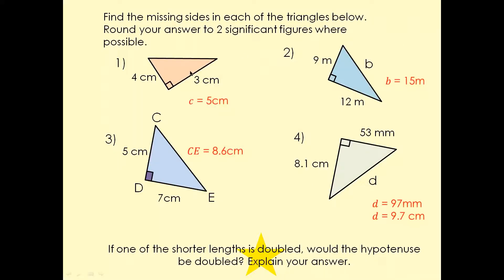For question one, we do 4 squared plus 3 squared. 4 squared is 16 and 3 squared is 9, so 16 plus 9 equals 25. The square root of 25 is 5. For question two, we do 9 squared plus 12 squared, which is 81 plus 144, equalling 225. The square root of 225 is 15.